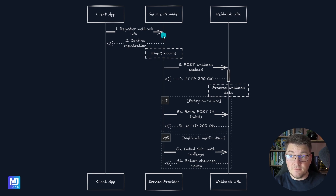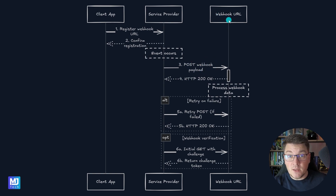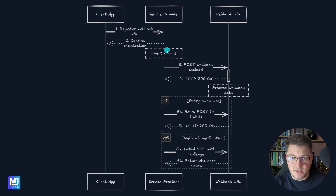After we register for the webhook, sometime in the future the event that we registered for occurs — and it's important to note that this event occurs in our service provider. The service provider is then going to send a POST request with a predefined payload to the webhook URL that we specified when registering. If the client application returns 200 OK, this completes the webhook flow. The client can then process this data asynchronously, and our service continues to serve any other requests.